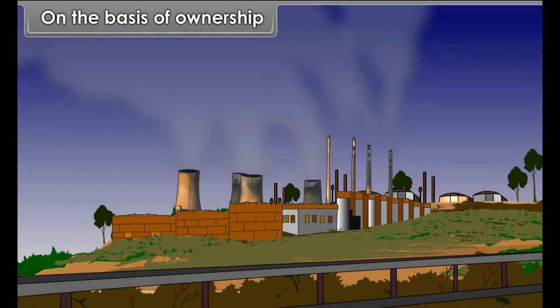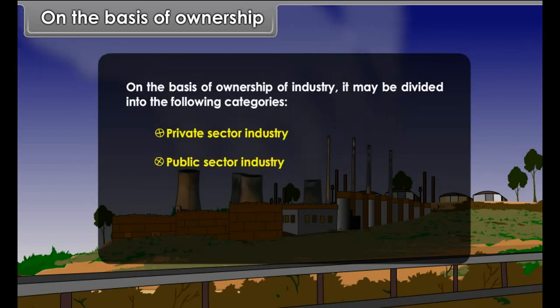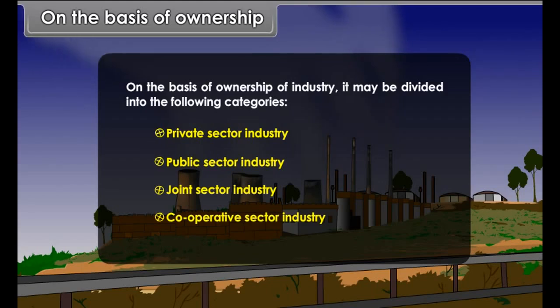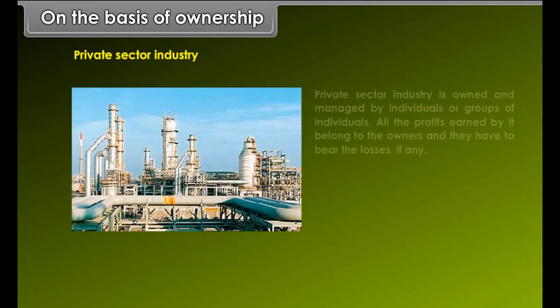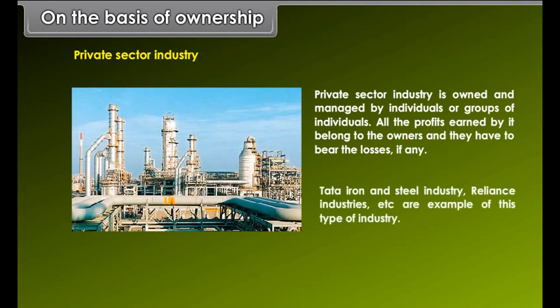On the basis of ownership, industries may be divided into private sector, public sector, joint sector, and cooperative sector industries. Private sector industry is owned and managed by individuals or groups of individuals. All profits earned belong to the owners, and they bear the losses if any. Tata Iron and Steel Industry and Reliance Industries are examples of private sector industry.